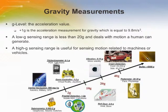Understanding the level of acceleration for an application enables a product to be designed with the optimal accelerometer. A low-g sensing range is less than 20g and deals with motion a human can generate. High-g is useful for sensing motion related to machines or vehicles — motion that humans cannot create. This graph shows applications and their respective acceleration ranges. For example, fall detection and tilt control is in the 1g to 2g range, shock detection is in the 2g to 8g range, and vibration is in the 8g to 10g range.